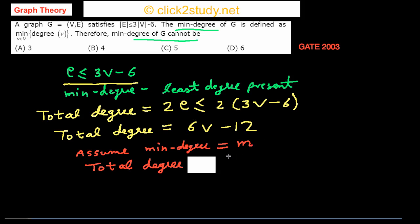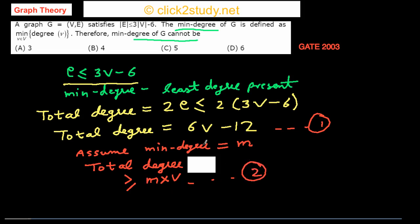So the total degree has to be greater than or equal to M times V, because V is the number of vertices and the least degree is M, meaning every vertex has degree at least M. Combining this with our earlier result — call them equation (1) and (2) — we get M·V ≤ 6V - 12.